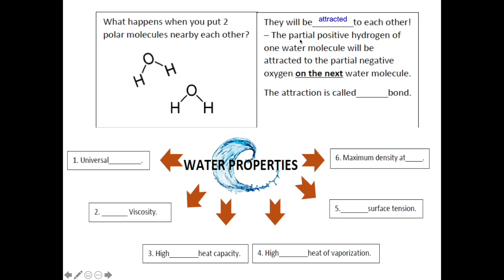Hence, the partial positive hydrogen of one water molecule will be attracted to the partial negative oxygen on the next water molecule. The attraction is called hydrogen bond, and since this is only an attraction, the bond has to be drawn by using a dashed line. The hydrogen bond, or the attraction, will only be formed if the two molecules are close enough to each other.